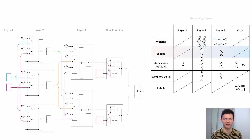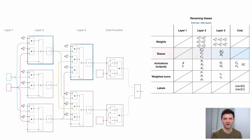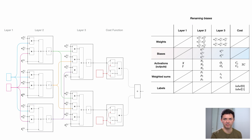Let's now rename our biases. Looking at rows: first row elements c1 and d4 both belong to the first neuron of their respective layer, second row to the second neuron, third row to the third neuron. We use the small letter B with a number indicating which neuron it belongs to, and a symbol telling us which layer. So B2 of L2 means the bias of the second neuron belonging in the second layer.